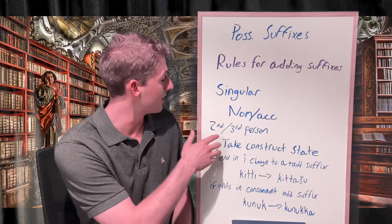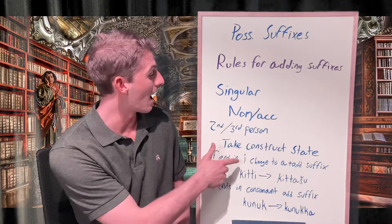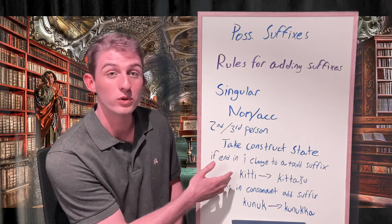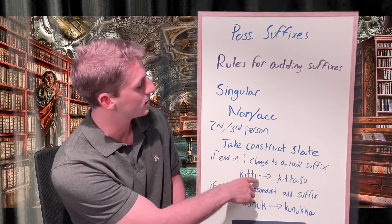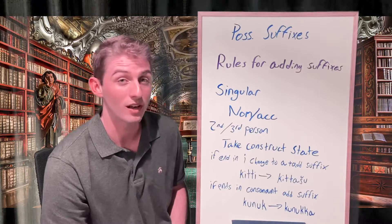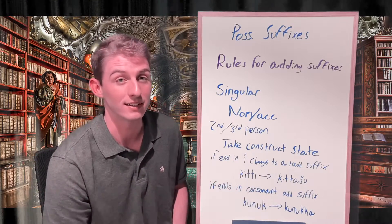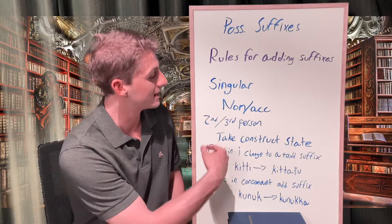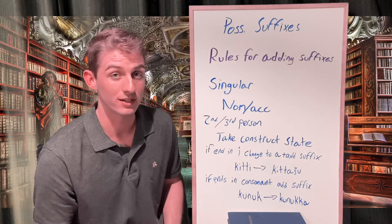For singular nominative or accusative nouns in the second or third person, these take the construct state. If that construct state form ends in an 'i,' the 'i' is changed to 'a' and the suffix is added. So 'kīttit' from 'kīttum' meaning 'reliability' has its 'i' changed to 'a' and the suffix added to get 'kīttašu,' meaning 'his reliability.' If the construct state ends in a consonant, the suffix is simply added directly. So 'kanuk,' the construct state of 'kanukum' meaning 'seal,' takes the suffix to give 'kanukka,' meaning 'your seal' with a masculine subject.